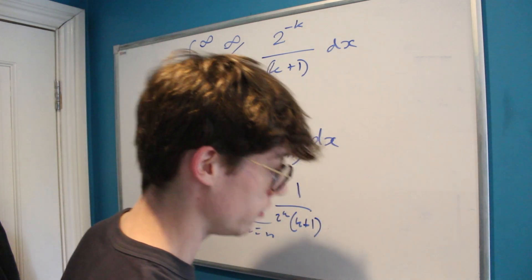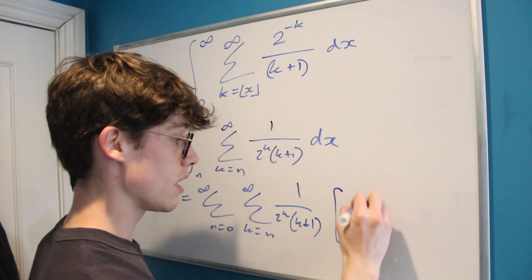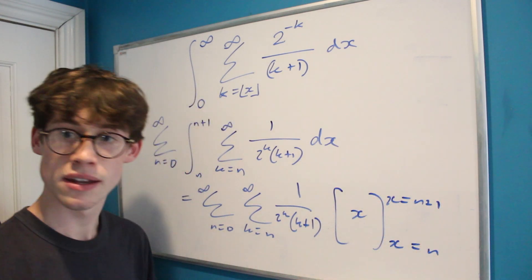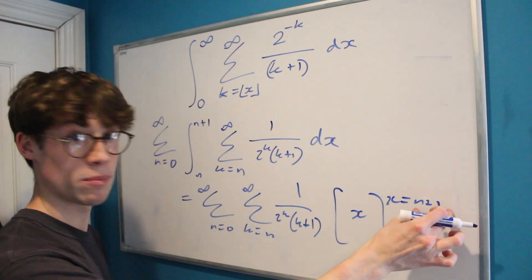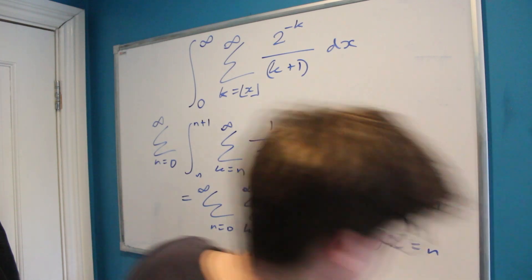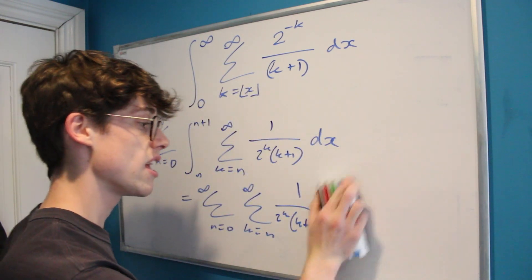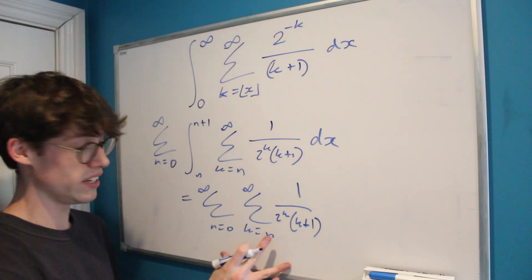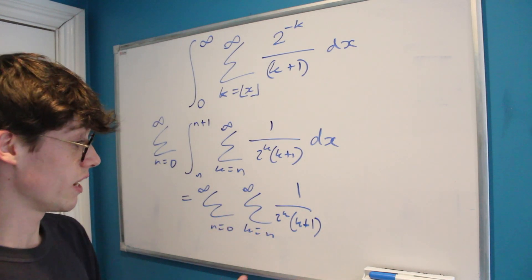Now of course the integral of 1 is x, and so all we have to do now is evaluate x between n plus 1 and n, which is essentially just doing n plus 1 minus n, which is just 1. And so what we found is that all of that integral was just a setup to lead us to this. This is the real problem that we're looking at now.